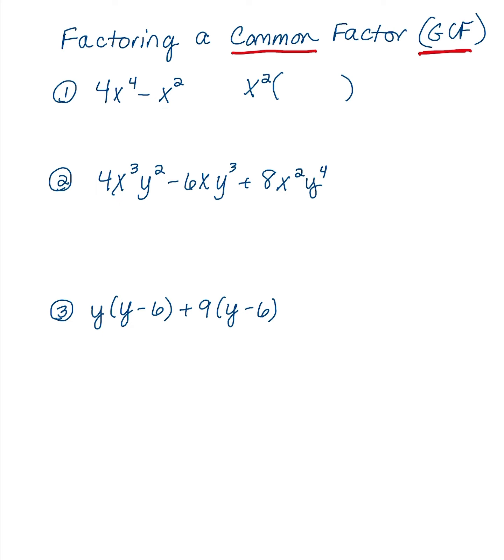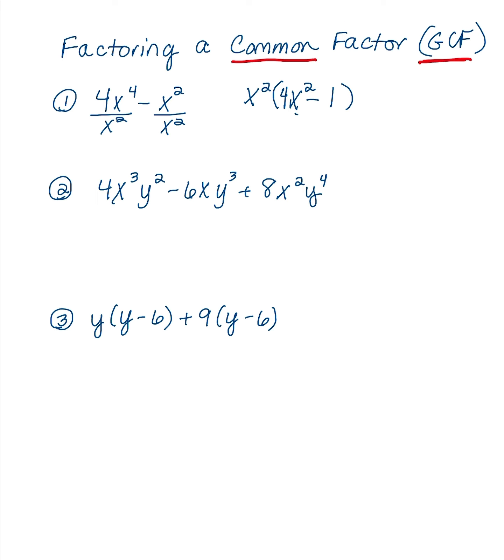So that means I can factor out an x squared. When I factor out an x squared, to figure out what's remaining after that's been factored out, you want to think about dividing each term by x squared. If I take 4x to the 4th and I divide out an x squared, I have 4x squared remaining. And then minus x squared divided by x squared is 1.